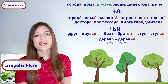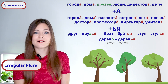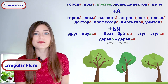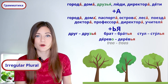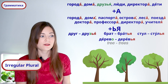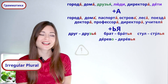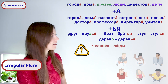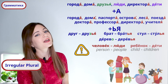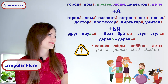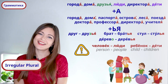And some words in the list are complete exceptions — they completely change the root of the word. They are actually different words. Have a look: человек — люди, ребенок — дети.